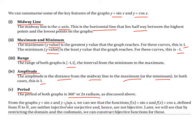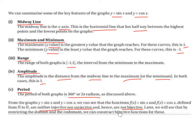From the graphs y equals sine of x and y equals cos of x, we can see that the functions f of x equals sine of x and f of x equals cos of x, defined from ℝ to ℝ, are neither injective nor surjective. Hence, they are not bijective. Later, we will see that by restricting the domain and the codomain, we can construct bijective functions for these.